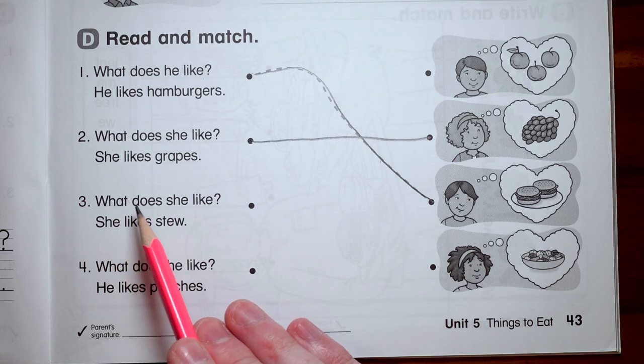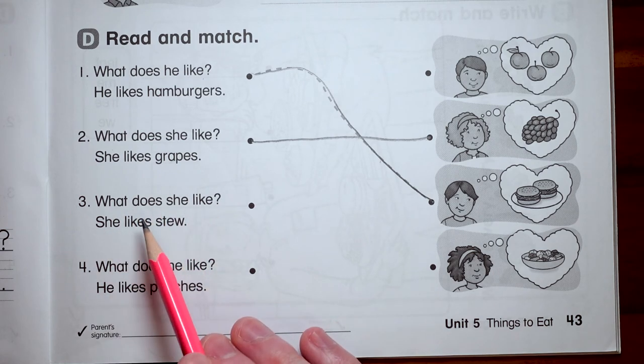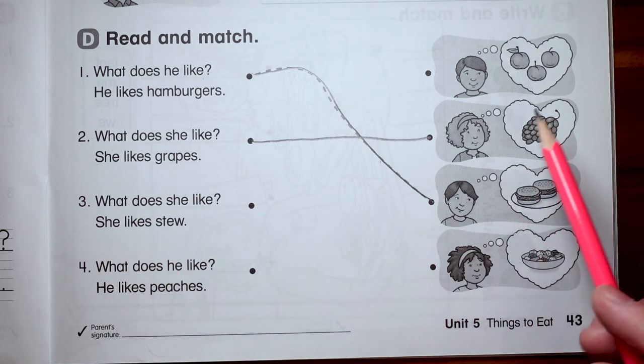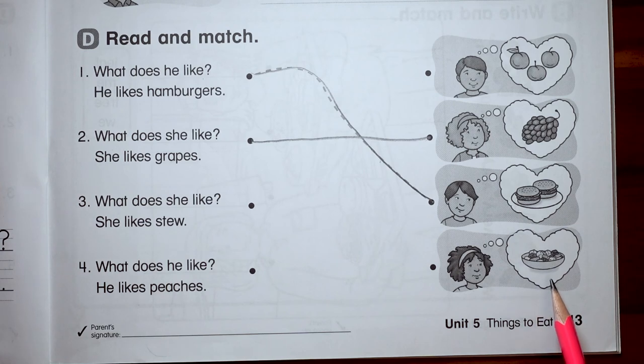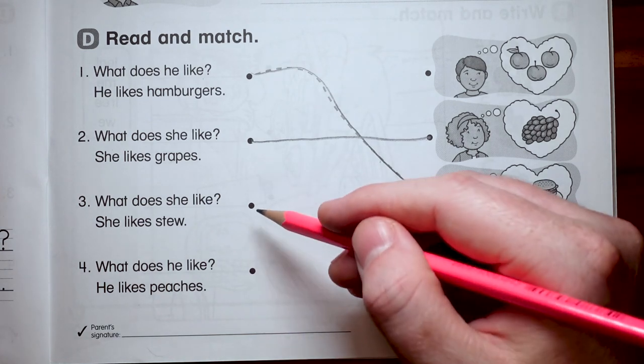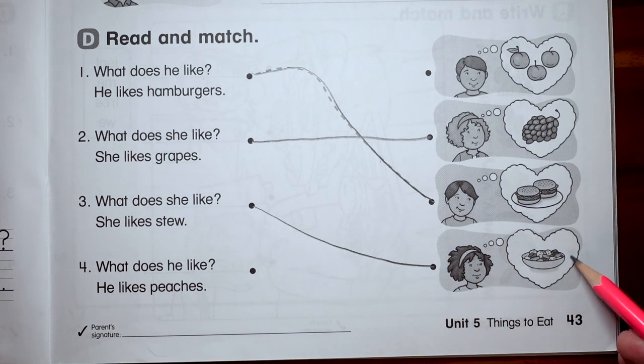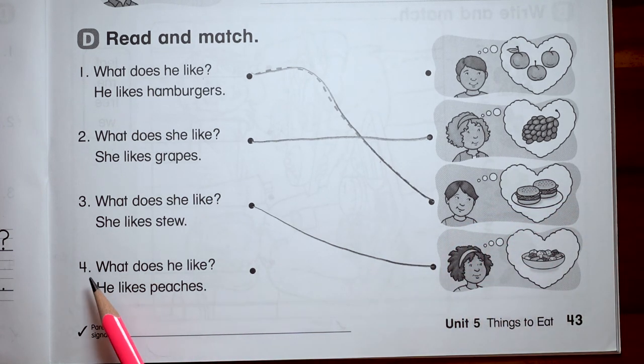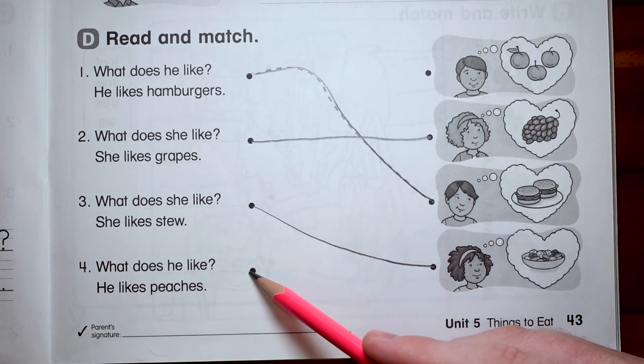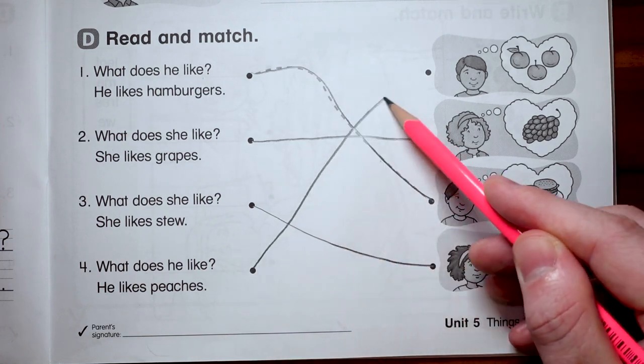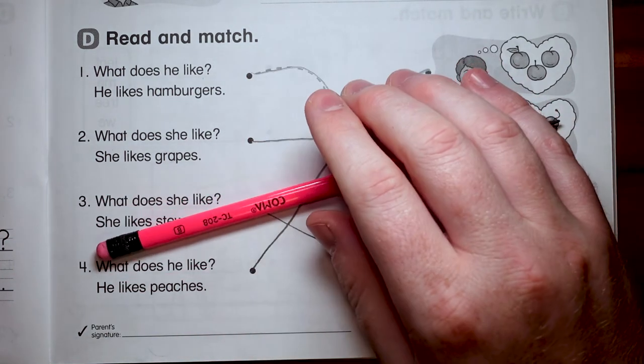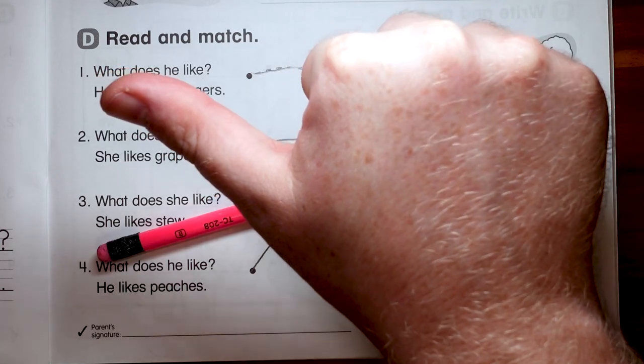Number three. What does she like? She likes stew. No, those are peaches. Yes, that is stew. Oh, that stew looks good too. Kind of looks like doenjang stew to me. Next one. What does he like? He likes peaches. That's this boy up here. Draw a line up to him. And just like that, we are done. Good job, new job.